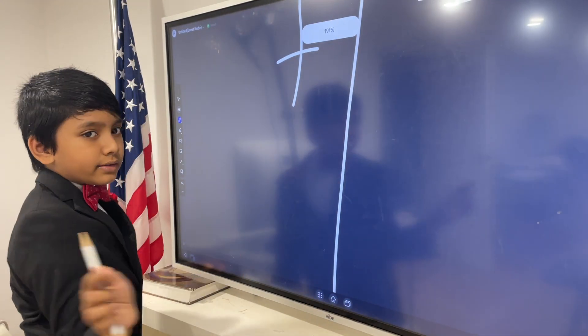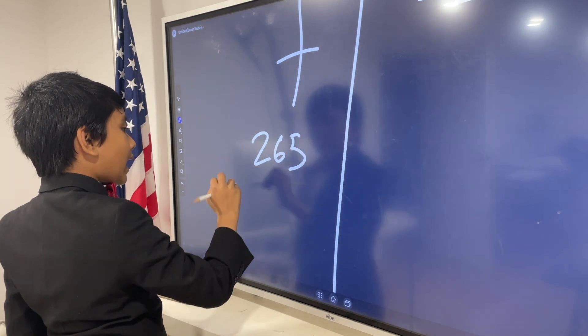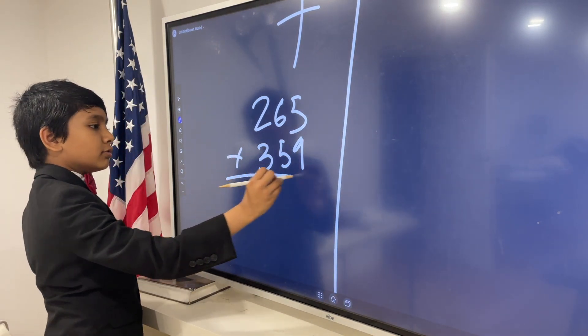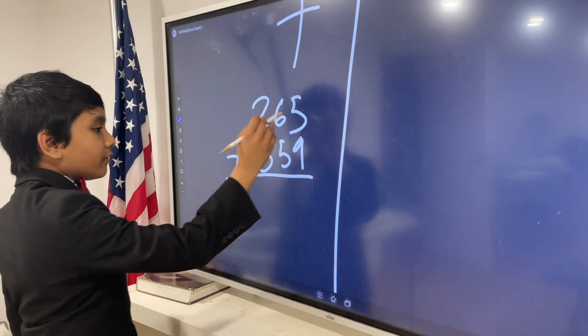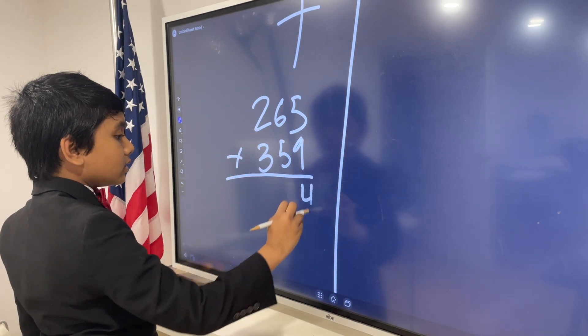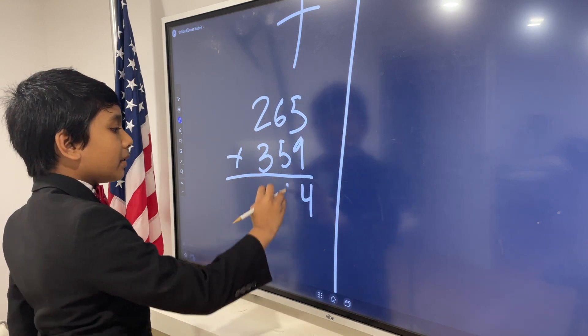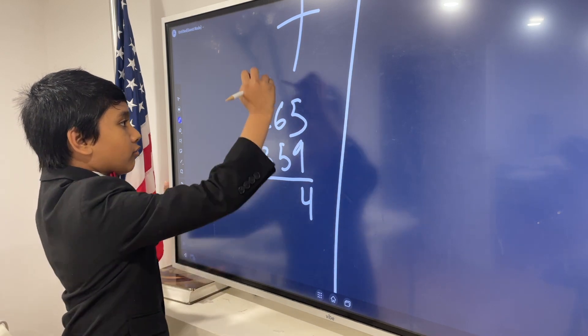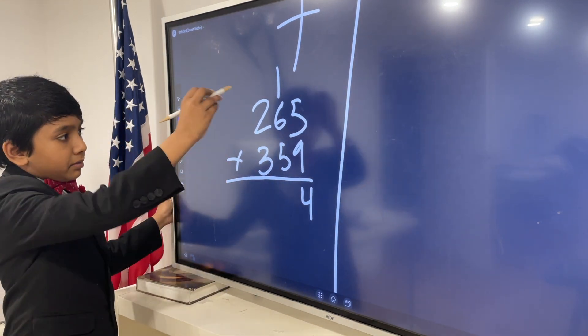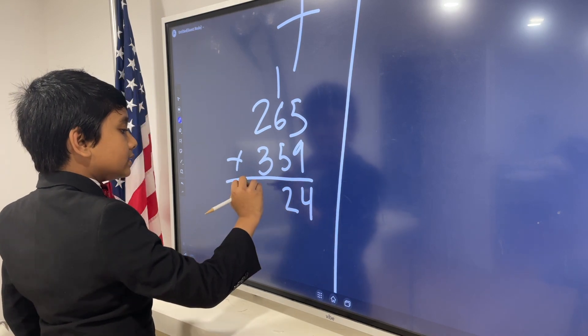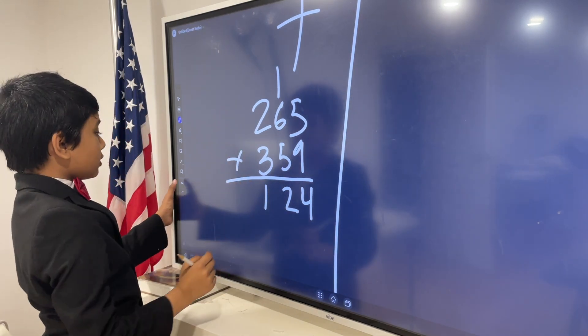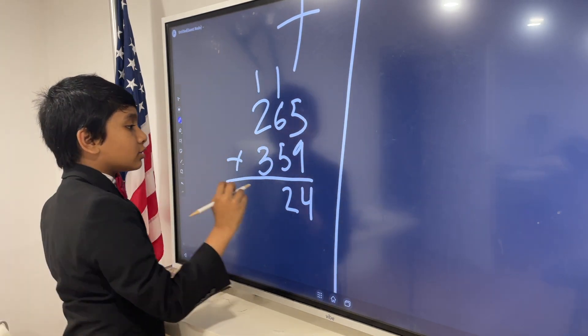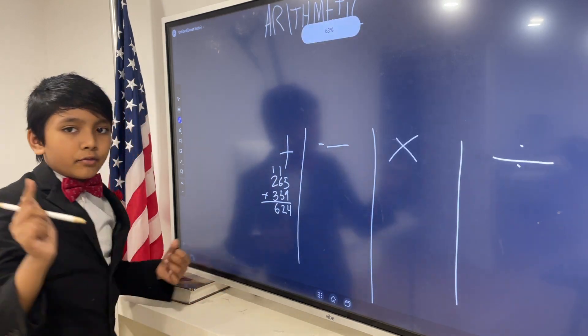So, first of all, there's addition in which we have regrouping. For example, if I had to add these two numbers, 265 and 359, 5 and 9 is 14. So, we take that 10 out of the 4 because it would block this answer place otherwise. So, we would take this 1, put it up here. 1 plus 6 plus 5 is 12. Since this 1 would block the answer place, we put it on top again. So, we get 1 plus 2 plus 3 is 6. 6, 2, 4. Alright.